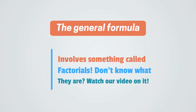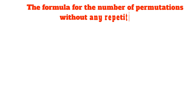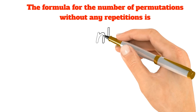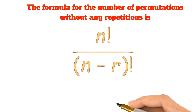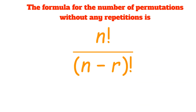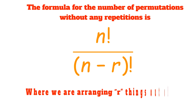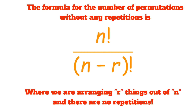The general formula for permutations without repetitions involves something called factorials. If you don't know what they are, just watch our video on it — the link is in the video description below. The formula for the number of permutations without any repetitions is n factorial divided by (n minus r) factorial, where we are arranging r things out of n total things with no repetitions allowed.